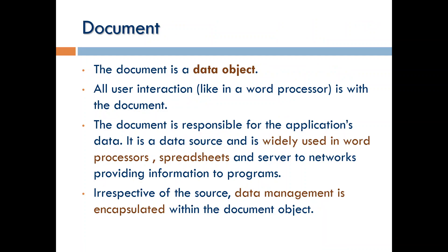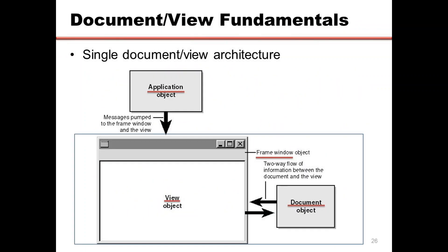Looking at the diagram: the top box is your whole Windows application. The application contains a frame window — the large rectangle below. The frame window is divided into two parts: the back end, shown on the right, which is the document object, and the front end, which is the view object. This is how you can visualize the document view architecture.